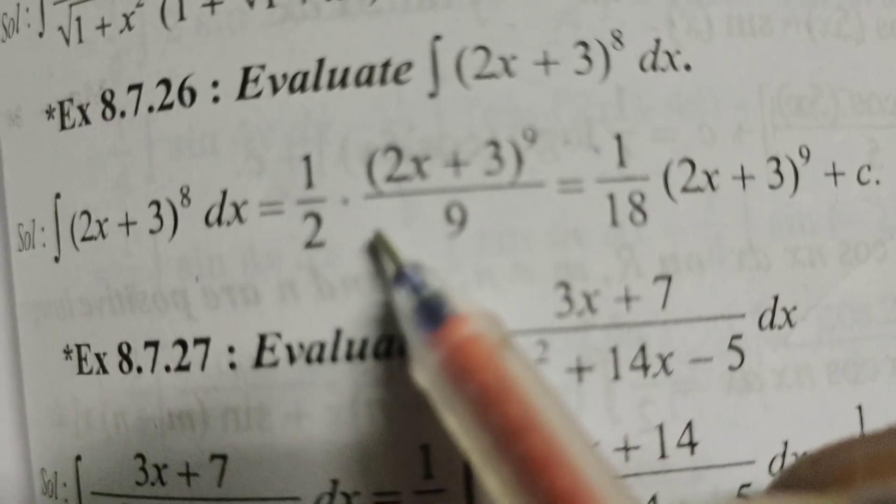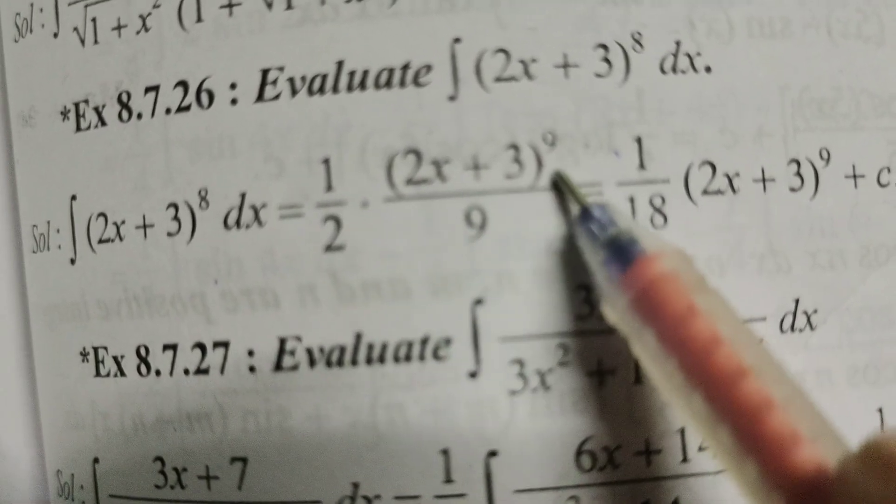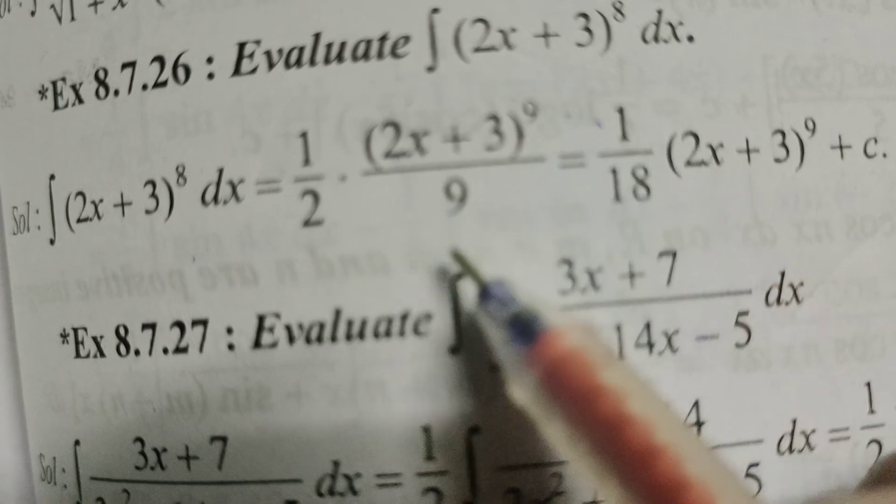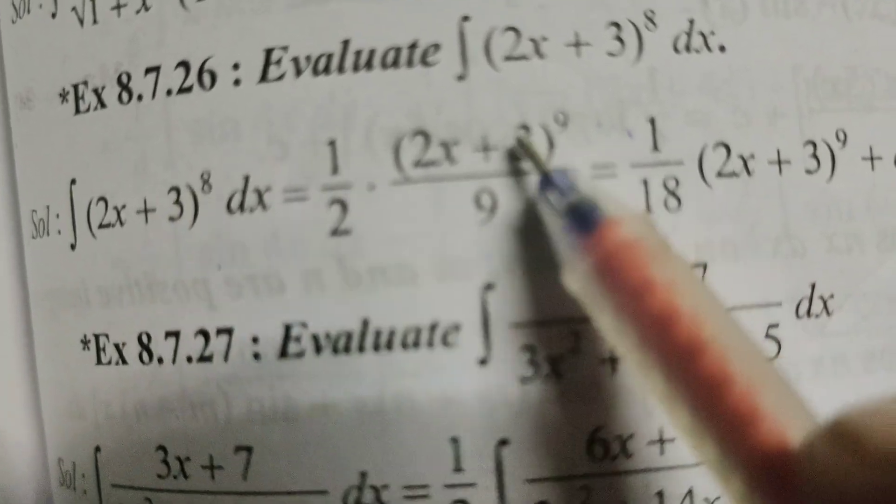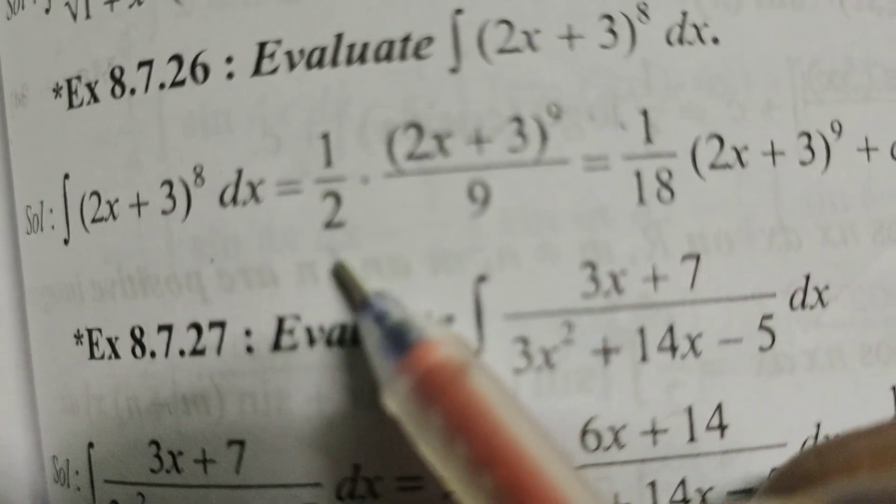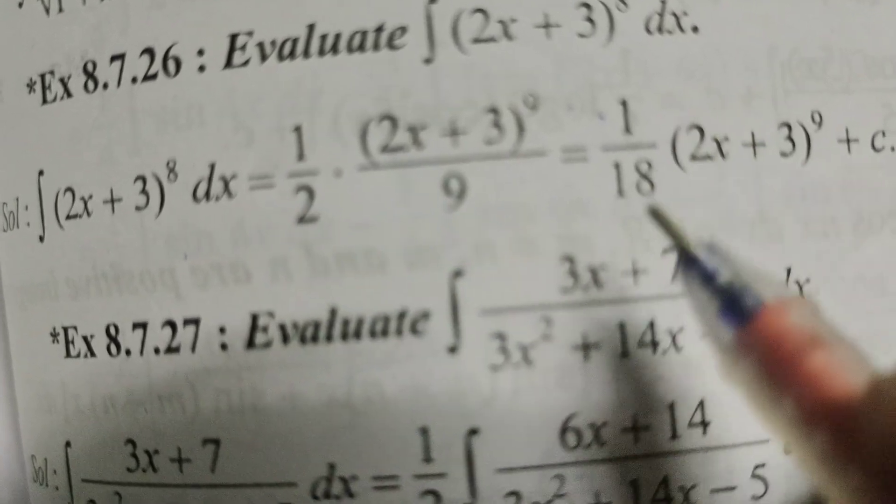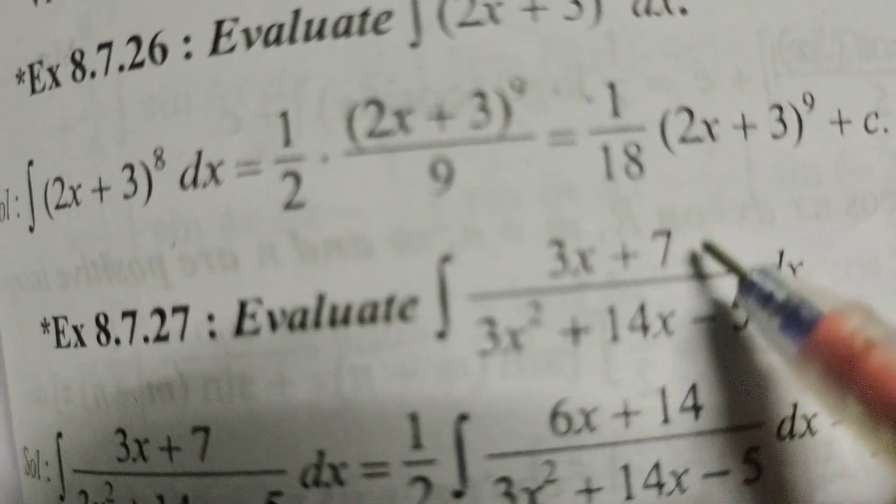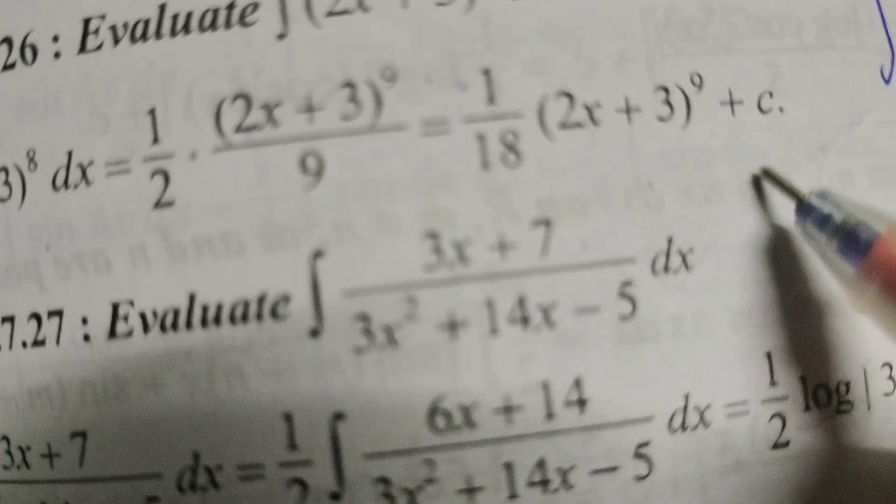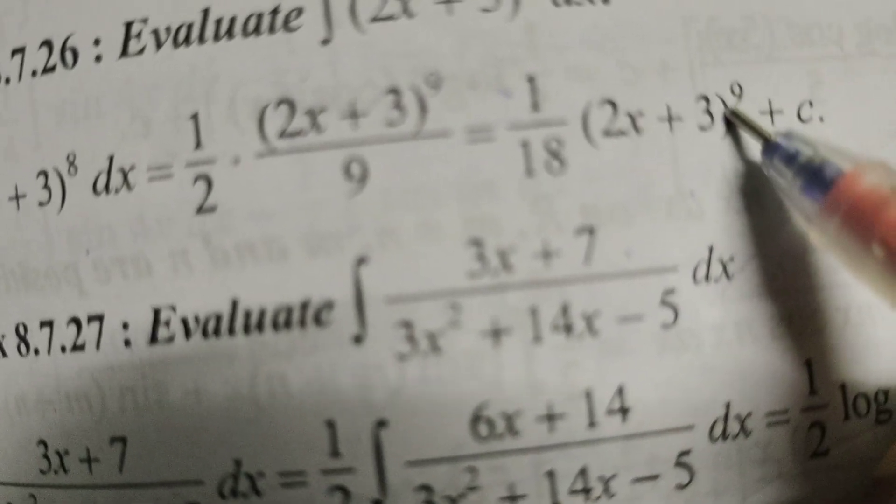Therefore, (2x + 3)^9 divided by 9. For the integration, we have a denominator of 1 by 2. That is 1/18 times (2x + 3)^9.